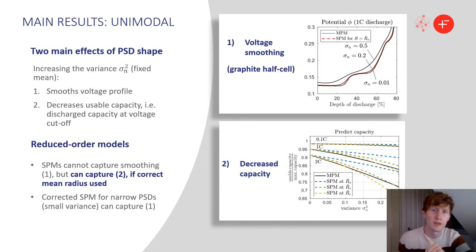Secondly, it decreases the usable capacity, or the discharge capacity, at cutoff. This is due to larger particles being underutilised. As far as reduced order models, we explored single particle models for various choices of mean radius. We found that they cannot capture the smoothing effects, but they can capture the capacity decrease if the correct radius is used, which we identify based on the use case.